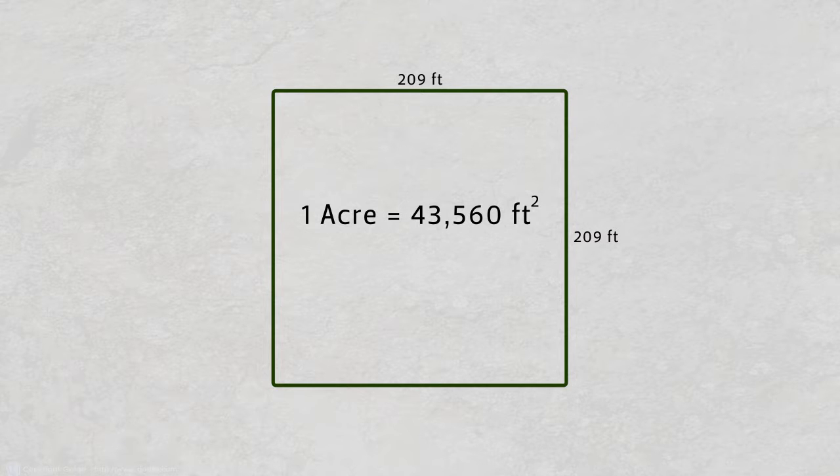209 feet by 209 feet is equal to 43,560 square feet, or one acre.